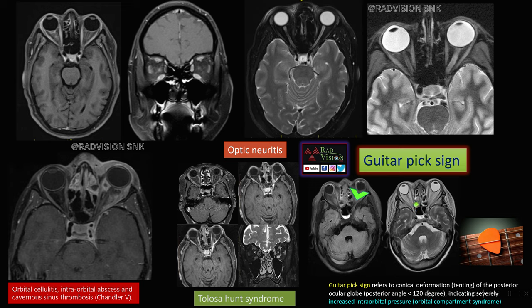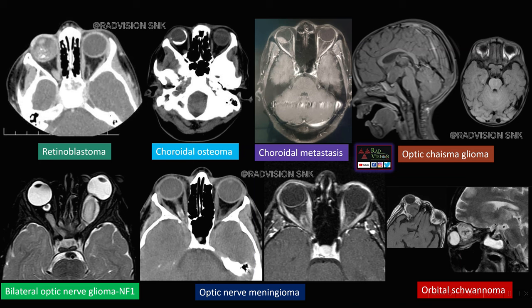Commonly seen in the COVID era, fungal infection can spread from the sinuses into the orbits, increasing intraorbital pressure and producing a coned oval shape of the orbit — classically called the guitar pick sign. Normally the posterior triangle angle is 180 degrees, but in orbital compartment syndrome or raised intraorbital pressure it is less than 120 degrees.